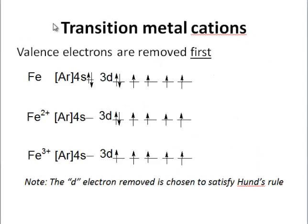Transition metal cations are a bit trickier. Valence electrons are removed first. Here is the iron atom with 6 d electrons, as you predict from the table. Argon core and the 4s subshell filled. Make an iron 2+. Valence electrons go first. The 2 electrons that go are the 4s electrons.